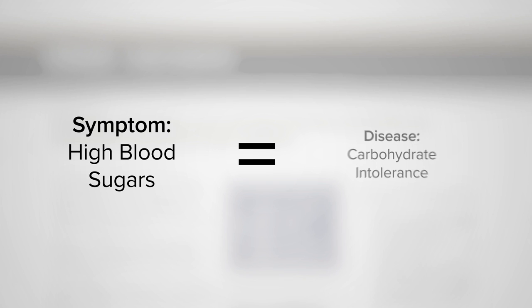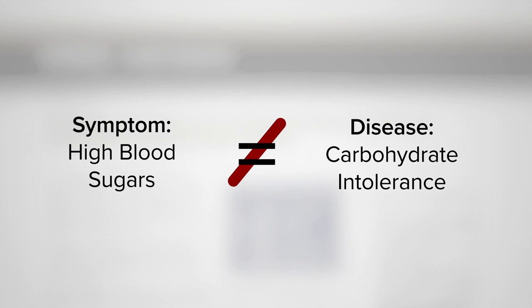but they are confusing the symptom, high blood sugars, with the disease, which is carbohydrate intolerance. People with diabetes can't properly handle carbohydrates, and this manifests as high blood sugars.